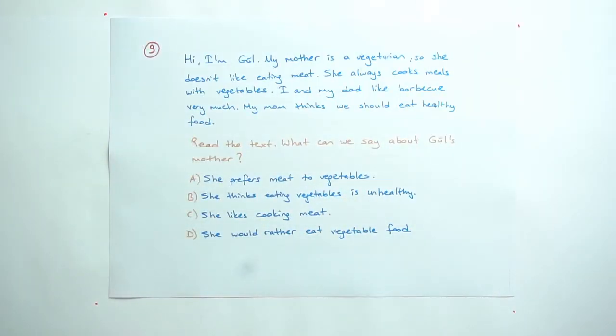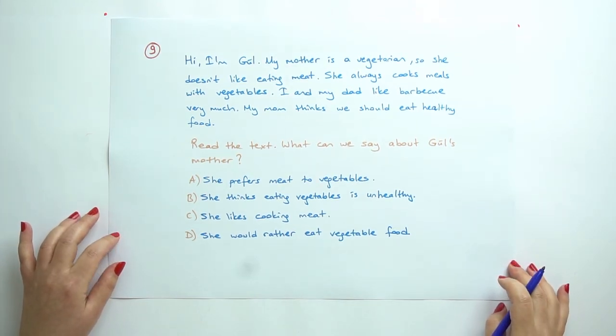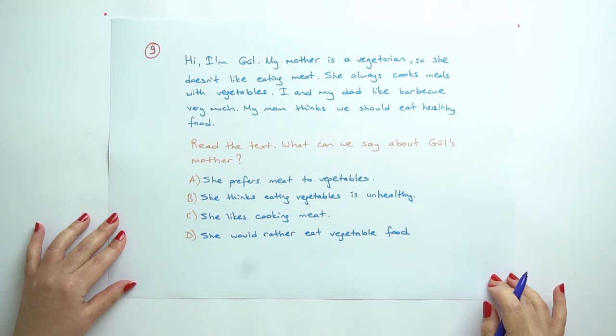Question 9: Read the text. What can we say about Gül's mother? Hi, I'm Gül. My mother is a vegetarian, so she doesn't like eating meat. She always cooks meals with vegetables. My dad and I like barbecue very much. My mom thinks we should eat healthy food.